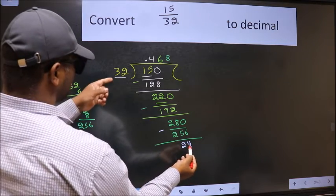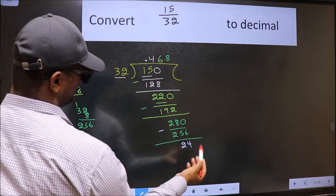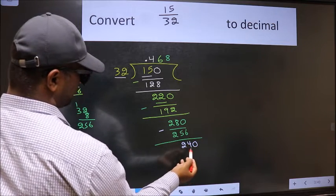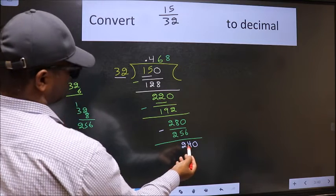24 smaller than 32. We already have the decimal. So directly take 0. So 240. A number close to 240 in 32 table is.